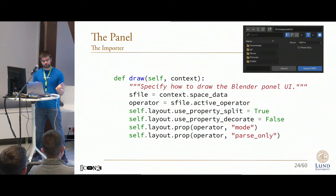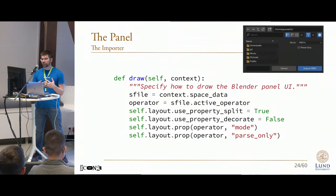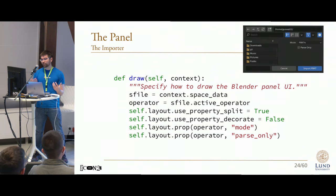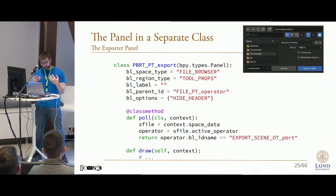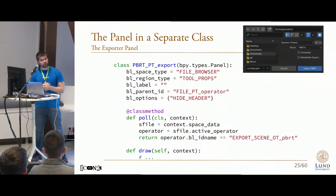As for the panel, we kind of have two options. We can either directly create a draw method in the operator class, or we could create an entirely separate class to specify how and where that panel should be placed. Creating this draw method would give you a panel in the file picker that can contain any extra options that you might want to have, such as the mode I mentioned earlier. And creating a panel class would give you a bit more control, as shown with the export operator, allowing you to specify where the panel is placed.